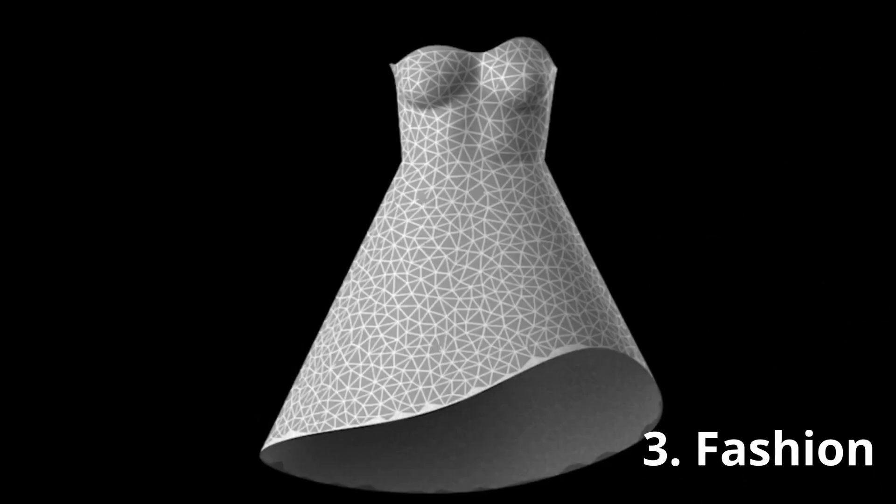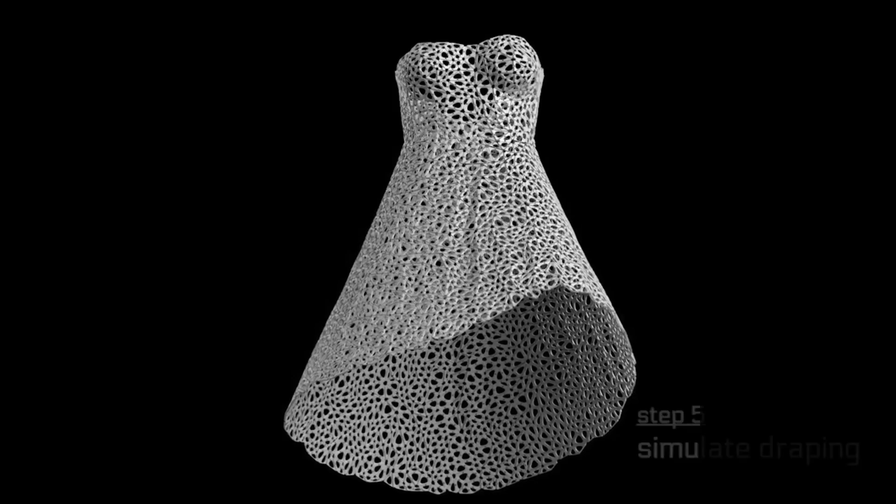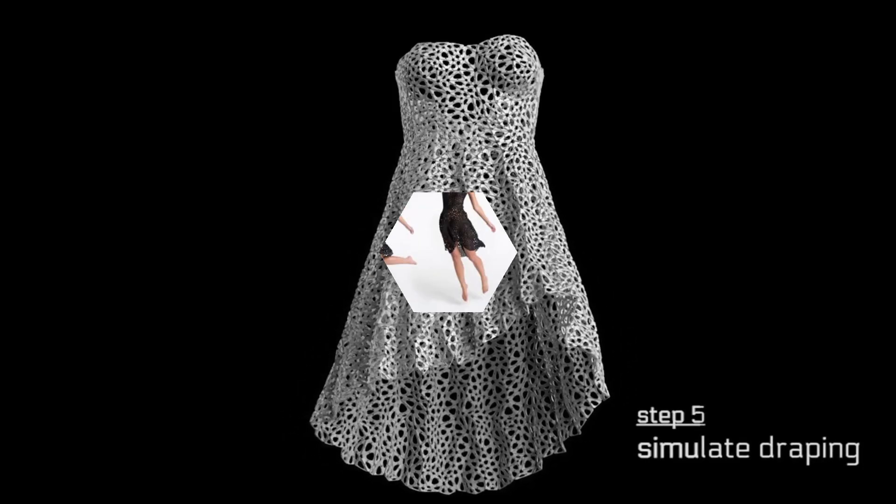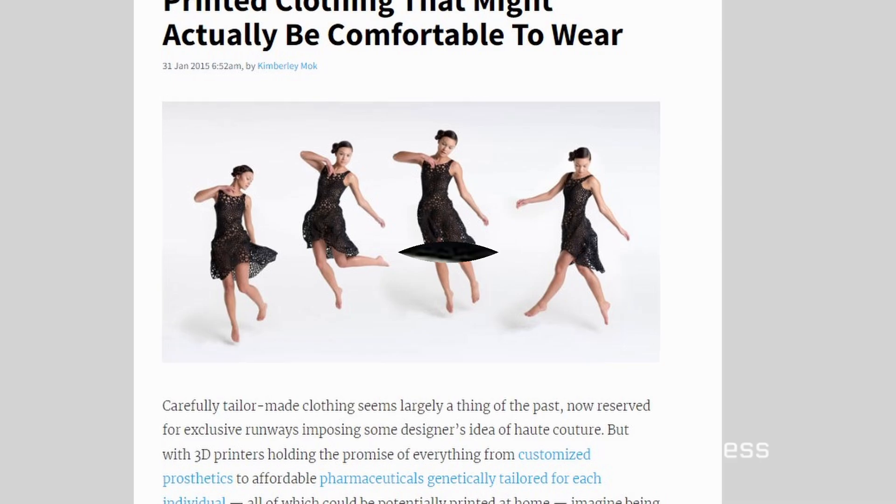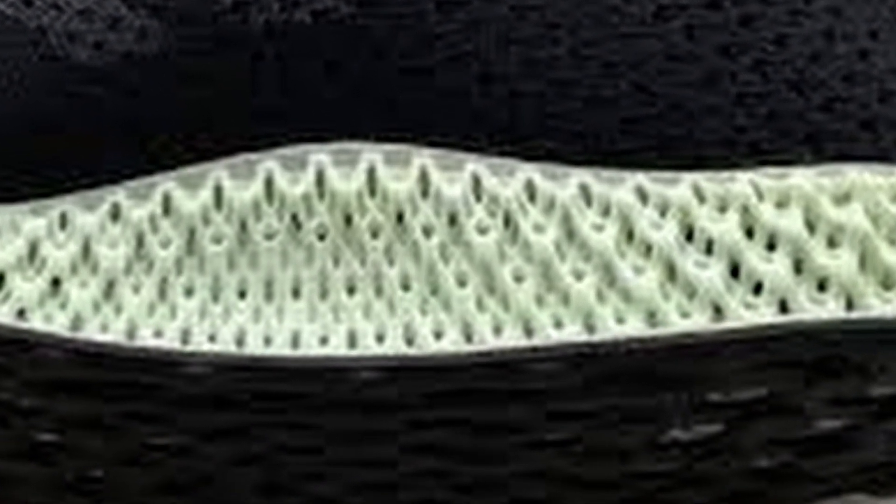3. Fashion. One of the ideas is that clothing could change according to the weather or the activity. For instance, clothes that become tighter in cold temperature, or shoes could change their shape when you start running to provide you with better comfort and amortization.